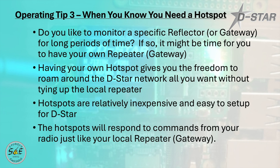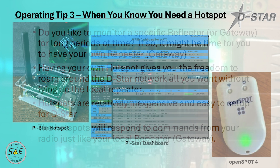Operating tip number 3 is when you know you need a hotspot. Do you like to monitor a specific reflector or gateway — say a busy reflector like Reflector 30 Charlie — for long periods of time? If so, it might be time to have your own repeater gateway, which is basically a hotspot. Having your own hotspot gives you the freedom to roam around the DSTAR network all you want without tying up the local repeater. Hotspots are relatively inexpensive and easy to set up for DSTAR, and they respond to commands from your radio just like your local repeater or gateway. Popular options include PiStar hotspots based on the Raspberry Pi — you'll find the JumboSpot MMDVM for usually under $100 as a simplex hotspot. Duplex hotspots based on the Raspberry Pi with a dual radio hotboard run around $125 at the time of this video.